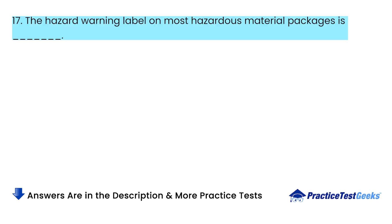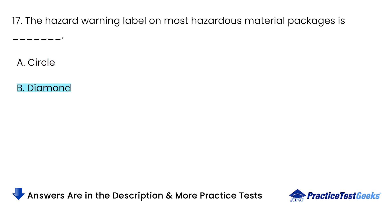The hazard warning label on most hazardous material packages is: A. Circle. B. Diamond. C. Rectangle. D. Oval.